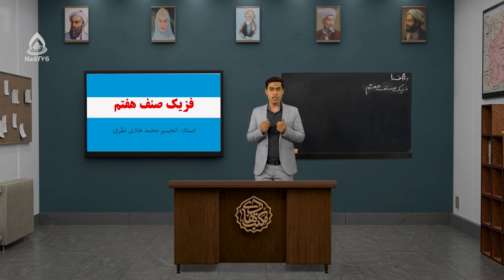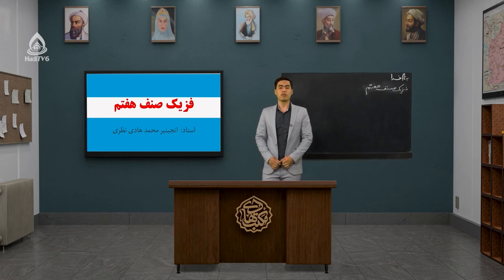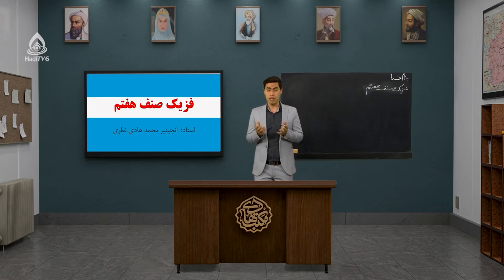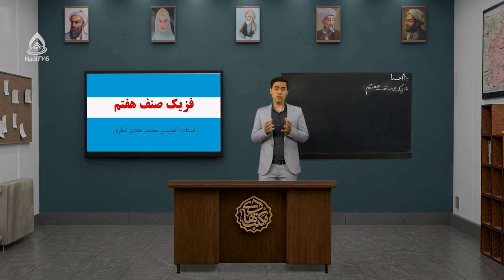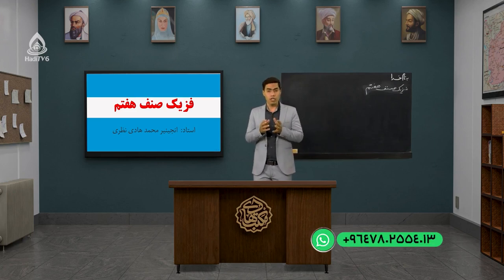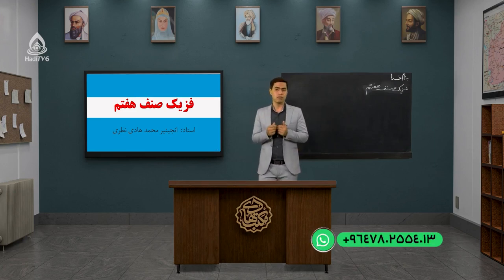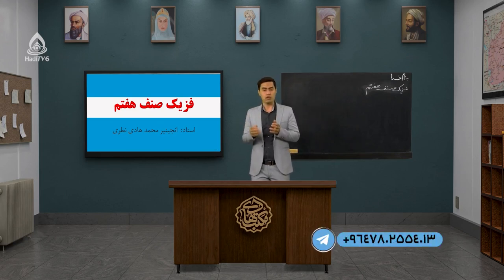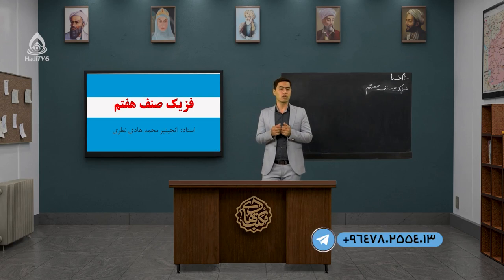چون قوه‌سنج‌های ساده از فنر استفاده می‌شه در ساختشان، ما نیاز داریم یک قانونی در فیزیک بدانیم به نام قانون هوک. قانون هوک می‌گفت که اندازه کشیدگی یا فشردگی یک فنر با قوه وارد بر فنر متناسبه؛ یعنی اگر شما قوه را دو برابر کنید، کشیدگی فنر هم دو برابر می‌شه.